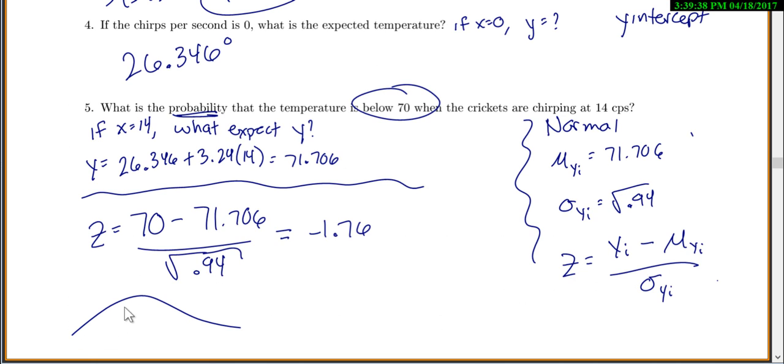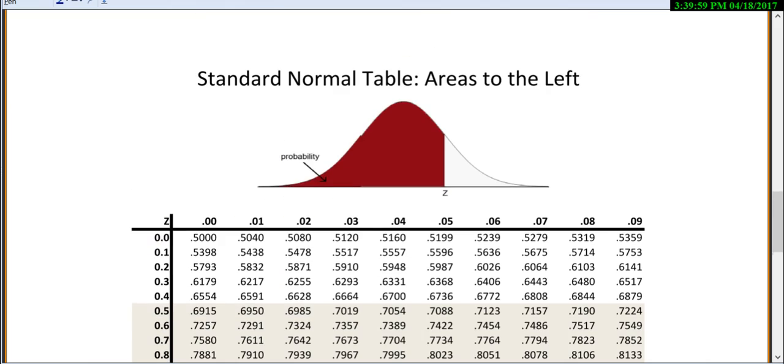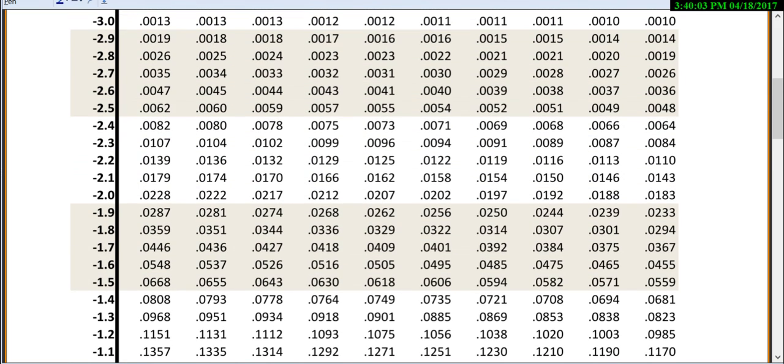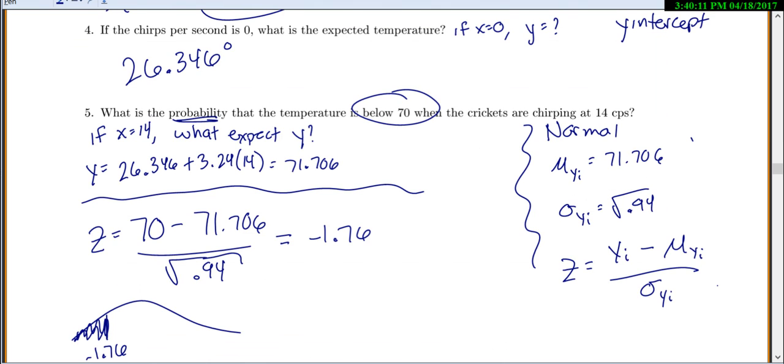So we're going to come in here and draw our picture. So here's my negative 1.76. And I want the probability or the area to the left. So I've pulled up my normal table and I want the area to the left of negative 1.76. Looks like we're at 0.0392. So 0.0392.